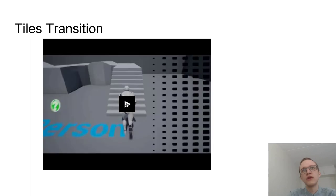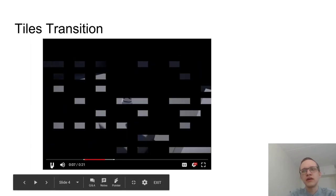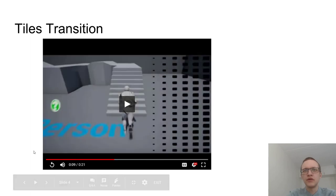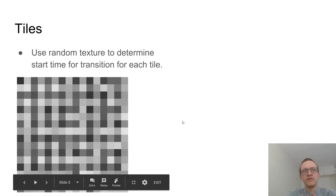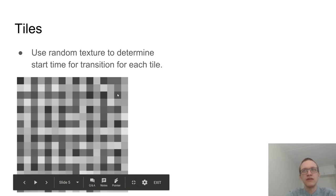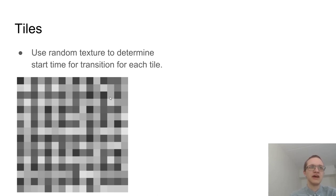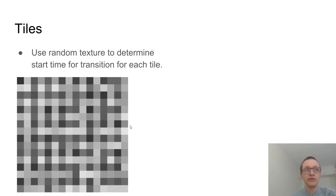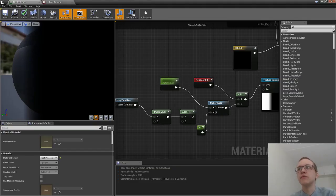The next effect subdivides the screen into tiles and every tile is switched to black at a different time, creating a pretty cool effect. I created a texture containing a whole bunch of different grayscale values. These grayscale values specify when each tile switches to black — very dark tiles have values close to zero and switch first, while bright tiles have values close to one and switch last.